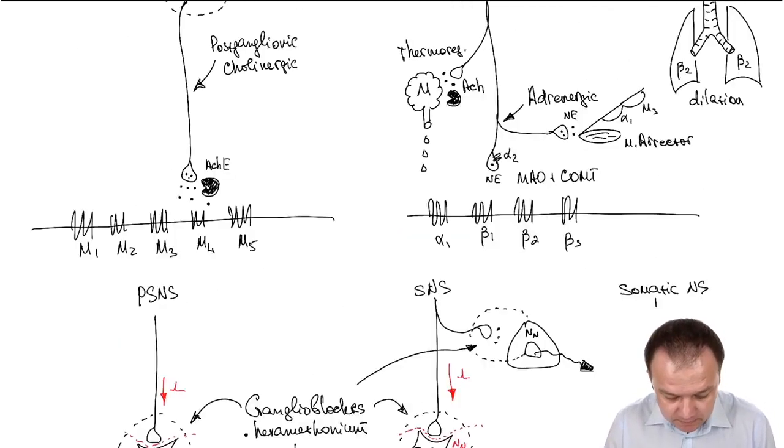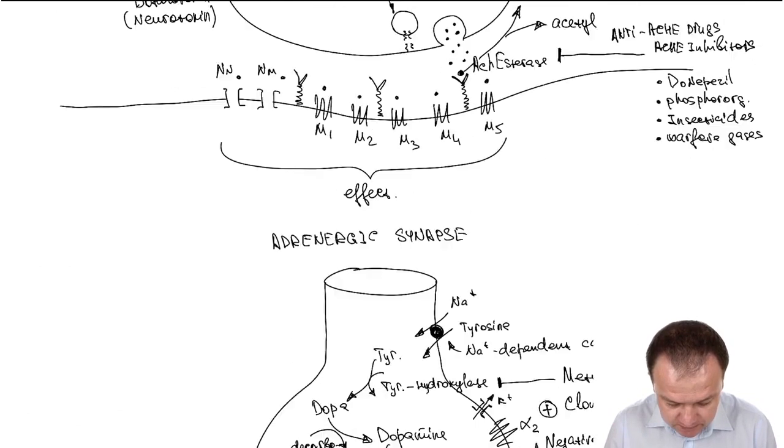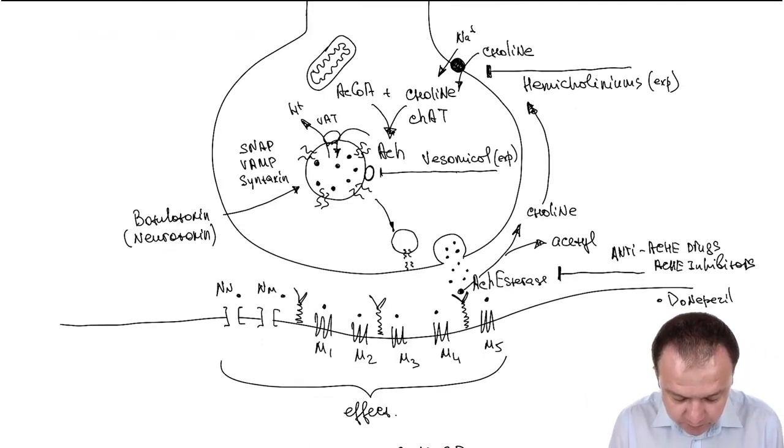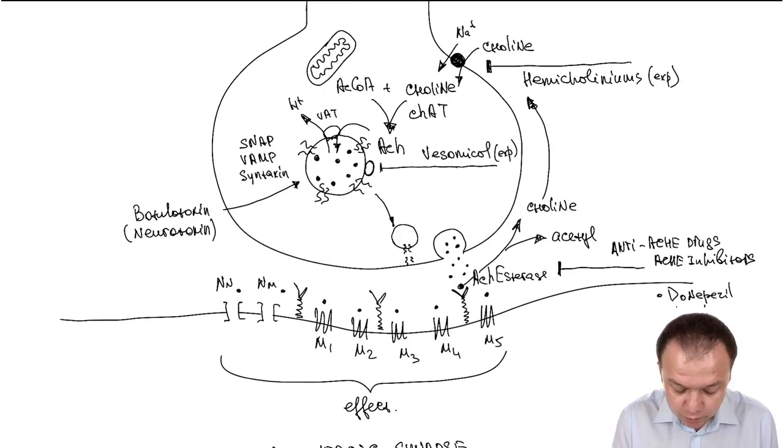I would like to remind you a little bit about the cholinergic synapse as we discussed. Botulinum toxin belongs to neurotoxins and it binds with specific proteins like SNAP protein.